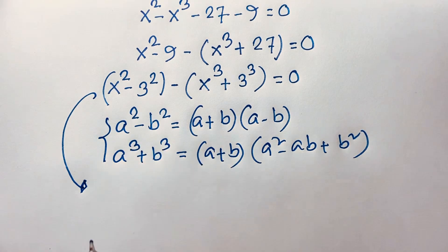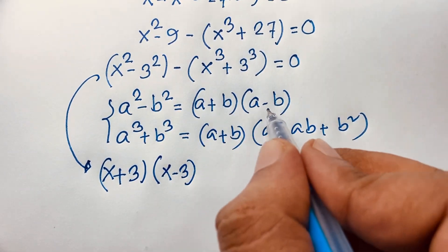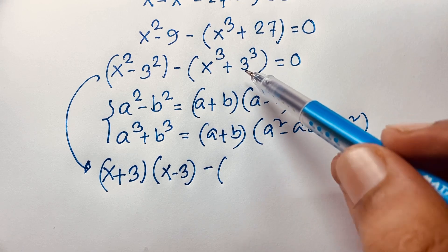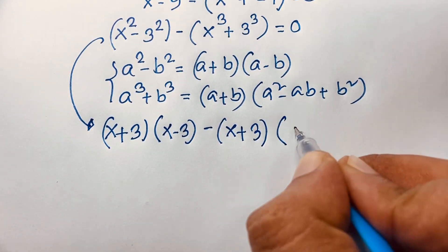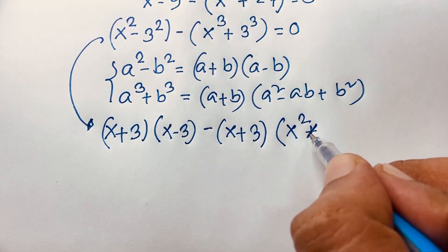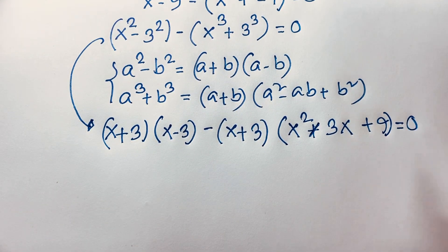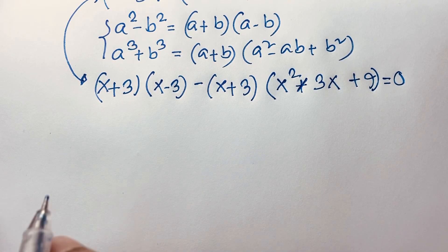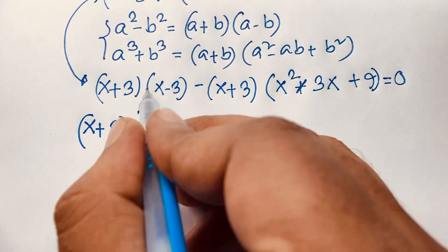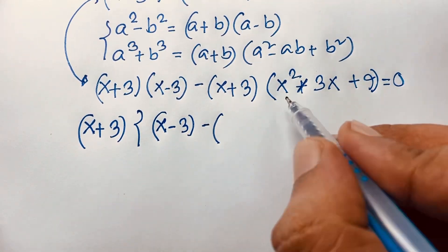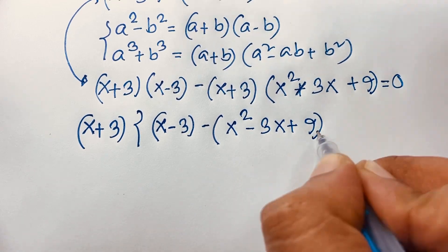With a = x and b = 3: the first part gives (x+3)(x−3), and the second part a³+b³ gives (x+3)(x²−3x+9). Factoring, we get (x+3)(x−3) minus (x+3)(x²−3x+9) equals 0. Taking (x+3) as common factor and dividing through gives: (x+3) times [(x−3) minus (x²−3x+9)] equals 0.